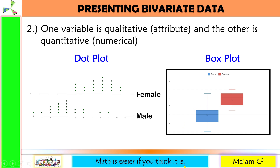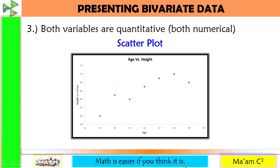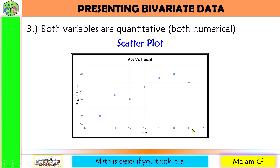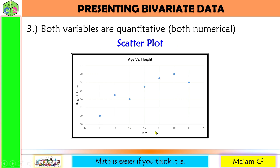For number three, when both variables are quantitative — both are numerical — we will use a scatter plot. For example, the age of teenagers from 13 to 19 and their corresponding height in inches. Both age and height are quantitative data. Consider this as a teaser; we are going to discuss more of this in our next lesson.